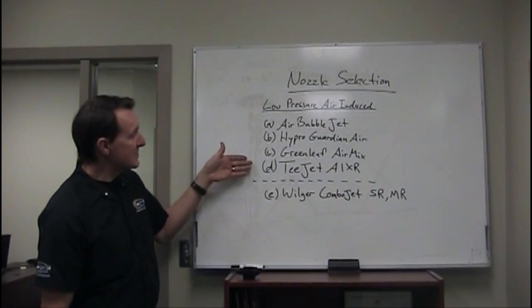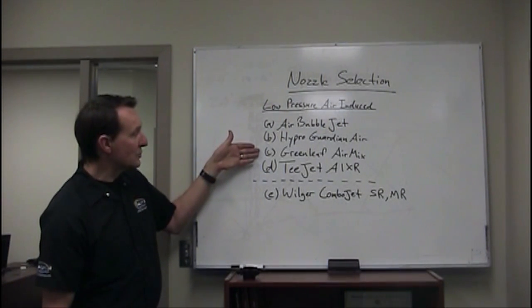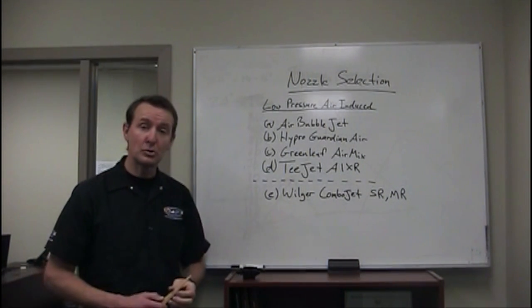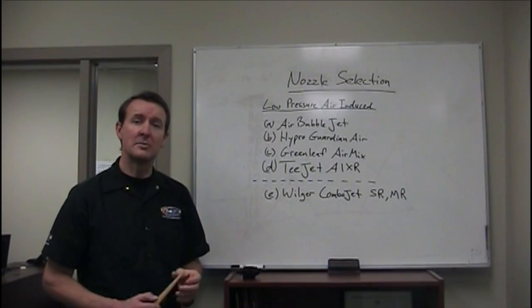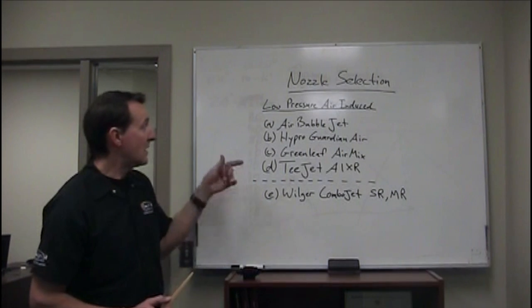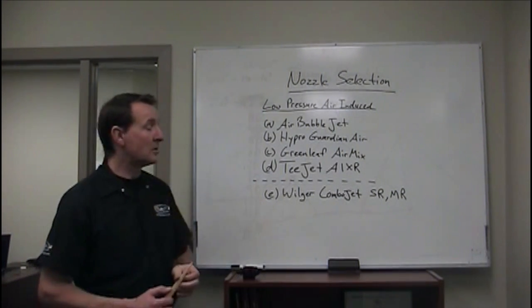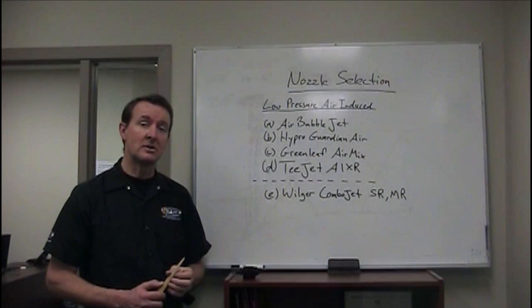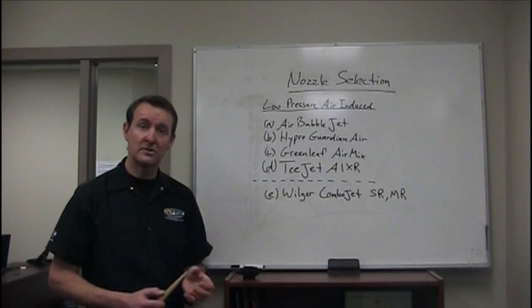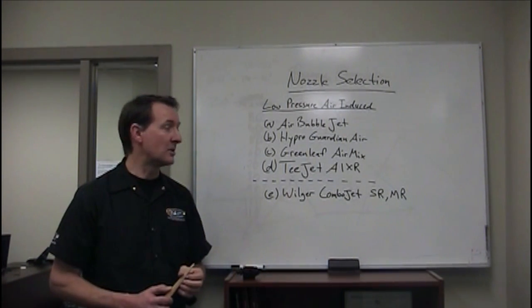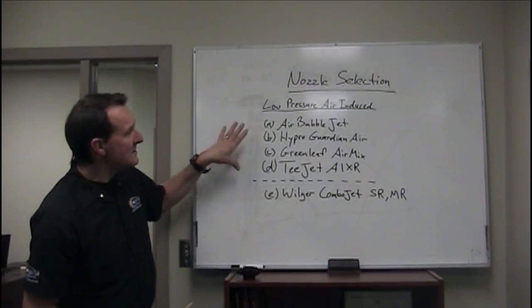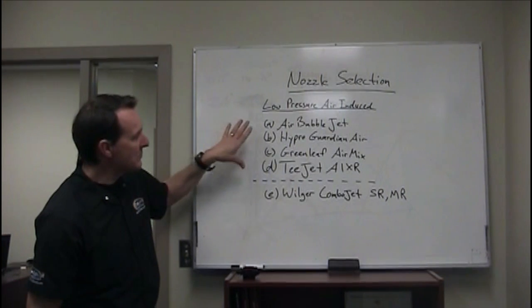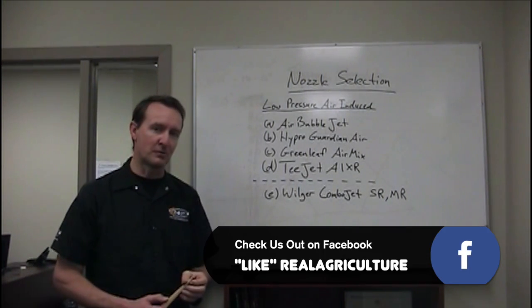Some of these companies make more than one. Greenleaf has a large selection including the Greenleaf TurboDrop, still a very good nozzle, a little bit coarser than the AirMix and a little bit more money but very versatile. Hypro and John Deere also make a coarser spray nozzle, the Ultra Low Drift or Ultra Low Drift Air, ULA as John Deere calls it. You do have more selection than what I've listed but this type of nozzle will probably do 75% of your work.